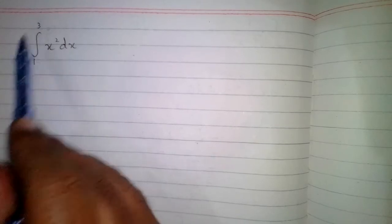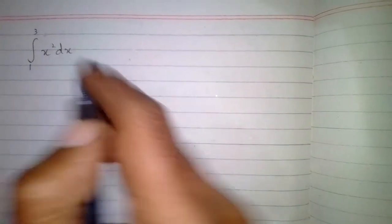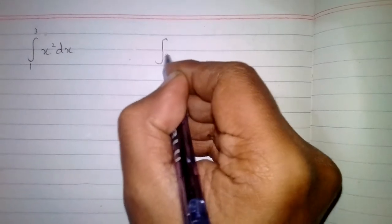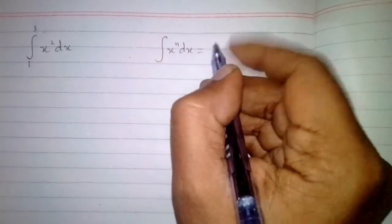When we have to integrate x square from 1 to 3, first of all in order to integrate x square we will use power rule of integration, which is integral of x to the power n with respect to x is x to the power n plus 1.